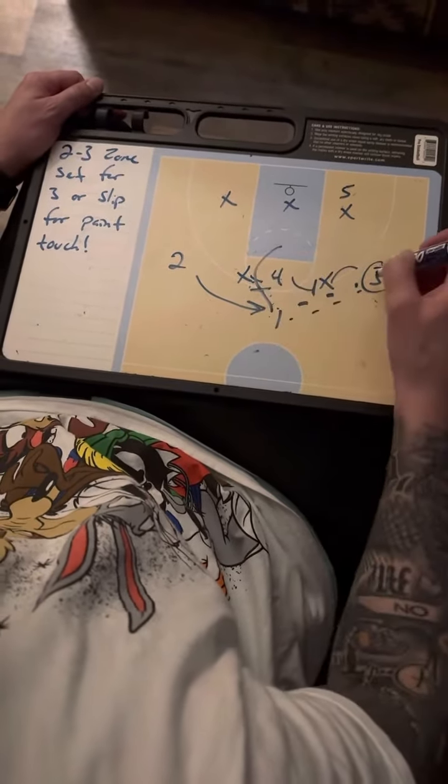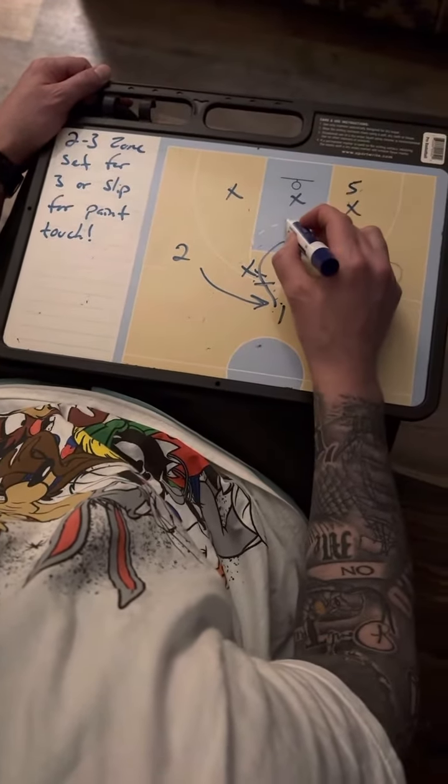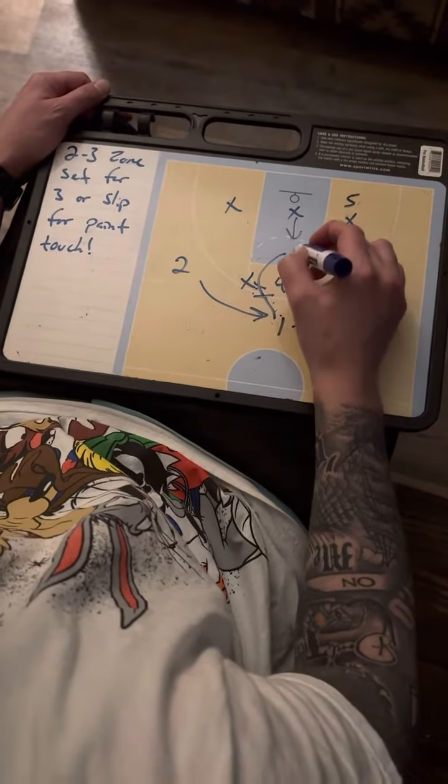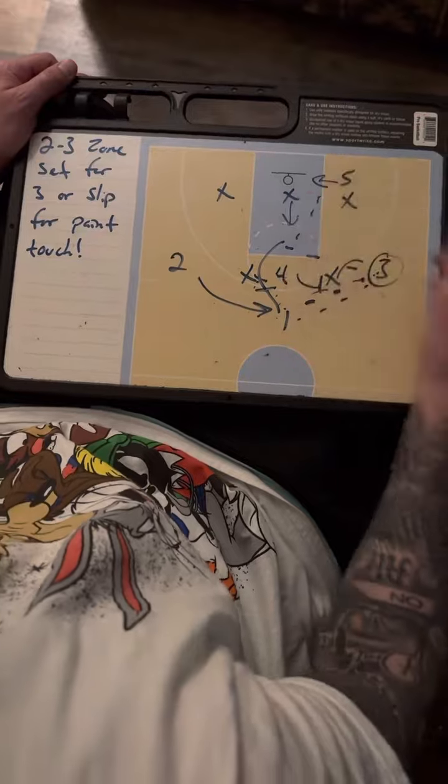We slip right there. So 3 has the option to throw or they can hit that slip and I have a shot right here. Or if I step up, I can dive to the rim, throw my bounce pass lob, depending on what you got. So let's get it.